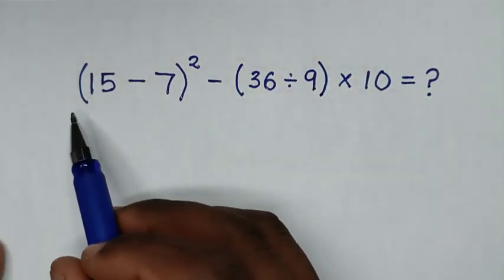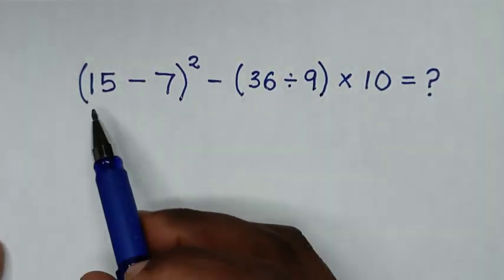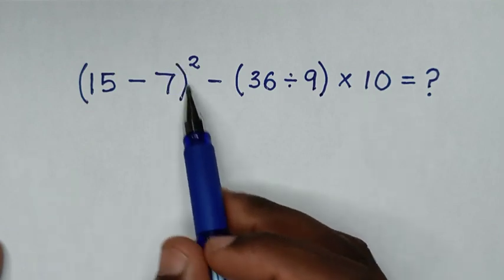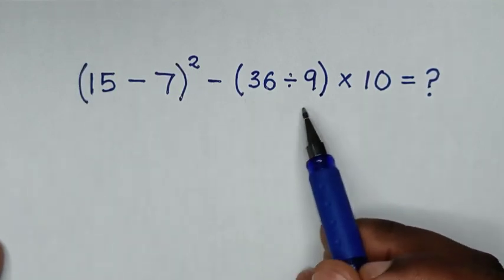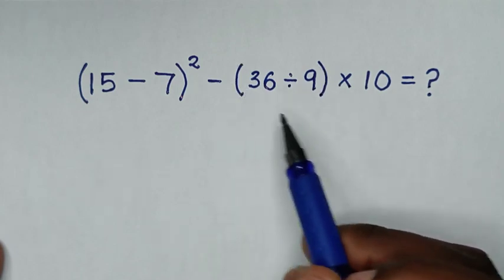Hello, you are welcome to solve this math problem which is (15 minus 7) squared minus (36 divided by 9) times 10.